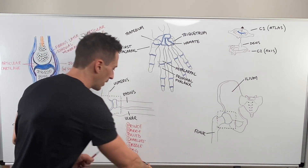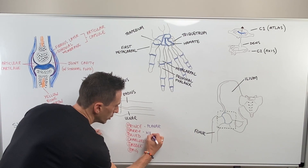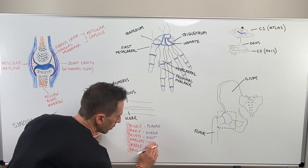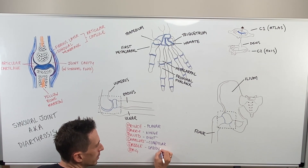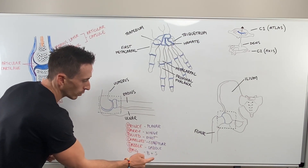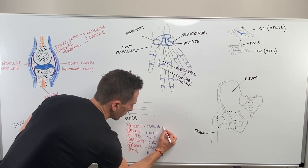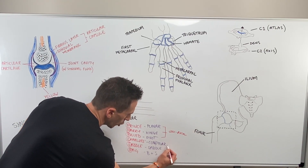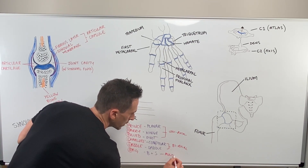So the six synovial joints are: planar, hinge, pivot, condylar, saddle, and ball and socket. The great thing is it goes from uniaxial to biaxial to multiaxial. The first three — planar, hinge, and pivot — are uniaxial, only moving in one plane. Condylar and saddle are biaxial, moving in two planes. And ball and socket is multiaxial, moving in many planes.